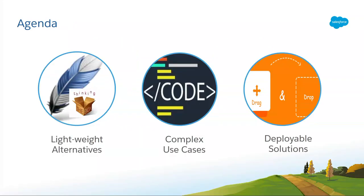Our agenda for today: why are we here? What are the use cases we were using JavaScript buttons for in Classic? What are some of the lightweight alternatives currently available in Lightning? We are going to take a deep dive into the complex use cases we have, how we solved it in our organization, and you are sure to walk away with code samples that are going to work both in Classic and Lightning.